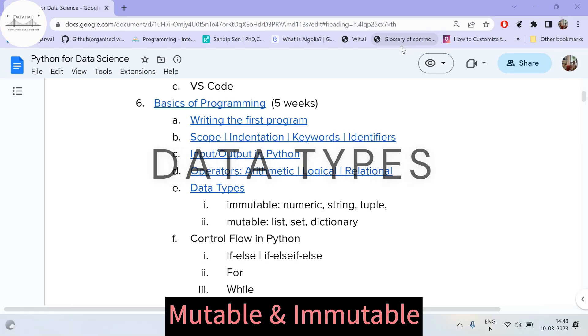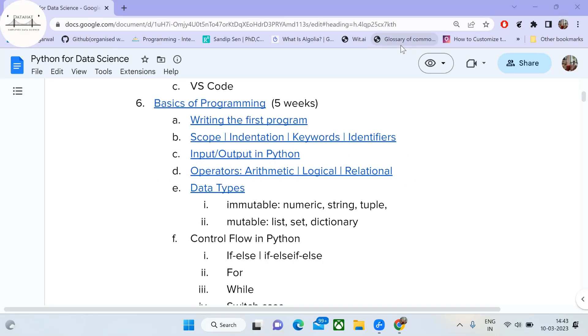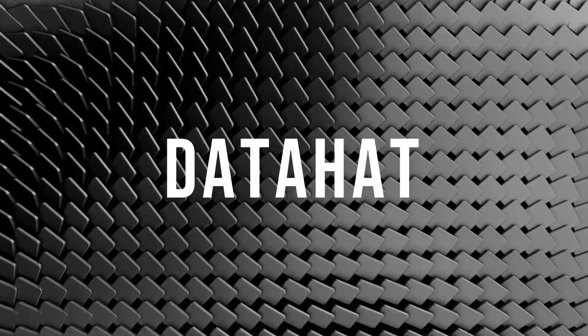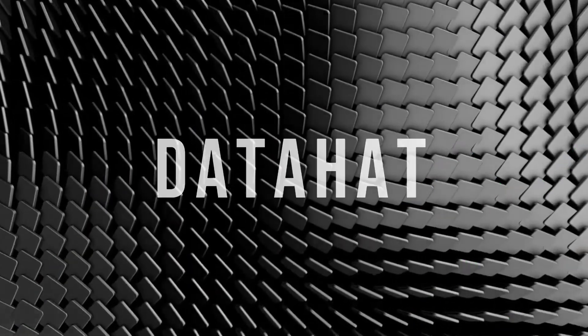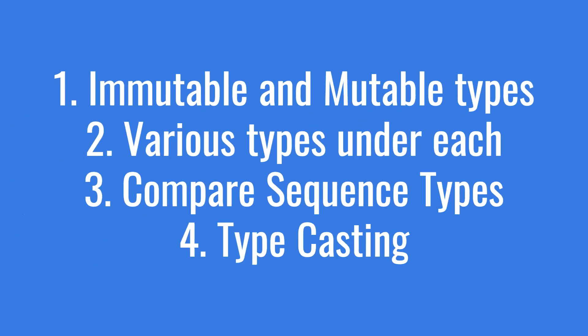Programmers often confuse and miss out on important interview questions based on mutable and immutable types. I am Saurav Agarwal, you are watching DataHack, and in this video we are going to understand what are mutable and immutable data types in Python. We shall explore the various data types under each category, compare the differences between list, set, tuple and dictionaries, and finally see how to typecast a variable from one data type to another.